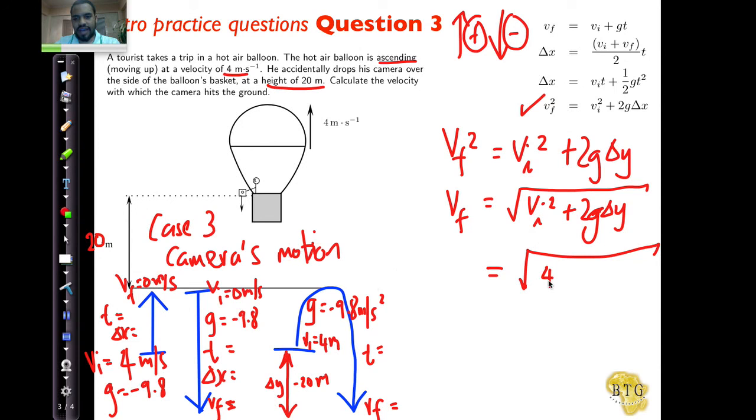Let's put it in. V initial velocity is four meters per second upwards, so that's positive, plus two times minus nine point eight and minus twenty. Let's do some calculations. Square root of four squared plus two multiplied by minus nine point eight multiplied by minus twenty. You get an answer of twenty point two meters per second.